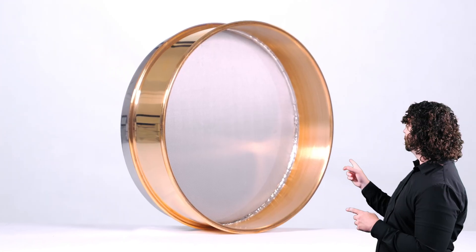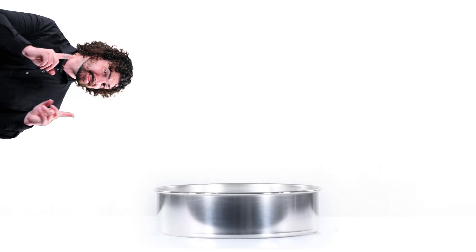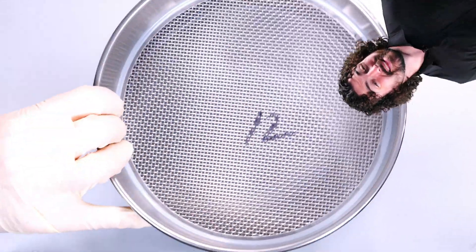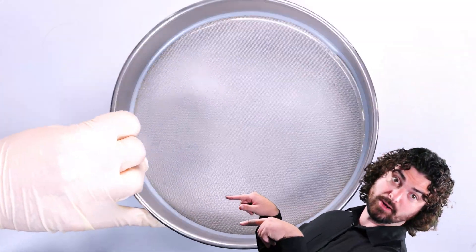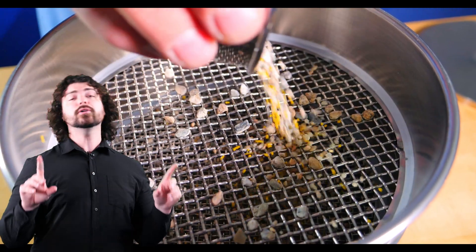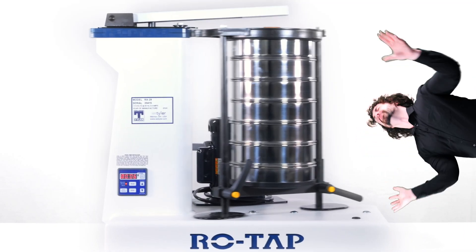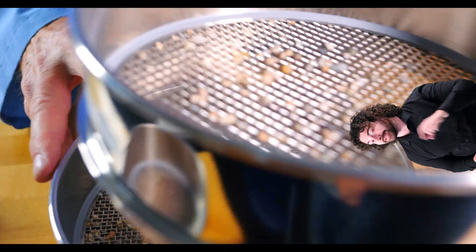The square mesh is installed in a separating instrument called a test sieve. The test sieves can be stacked on top of each other with the coarsest mesh being on the top, coarsest meaning largest, and the finest mesh, the smallest, being on the bottom. The assorted particles that need to be separated are poured into the top sieve. And through the use of a sieve shaker, they're sorted into the sieve that matches the particle size.